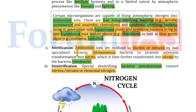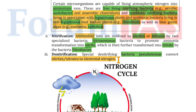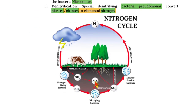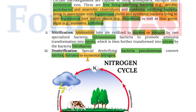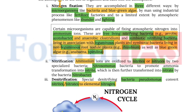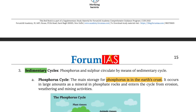Examples include Rhizobium as well as blue-green algae such as Anabaena and Spirulina. In nitrification, ammonium ions are oxidized to nitrites or nitrates by two specialized bacteria: Nitrosomonas promotes ammonia transformation into nitrite, which is then further transformed into nitrate by the bacteria Nitrobacter. In denitrification, Pseudomonas converts nitrites to elemental nitrogen (N2). So the overall process: nitrogen-fixing bacteria convert free nitrogen into ammonia, which is converted by nitrifying bacteria into nitrates and nitrites, and then converted back to free nitrogen by denitrification. Denitrification bacteria and nitrification bacteria — Nitrosomonas and Nitrobacter — are shown here.